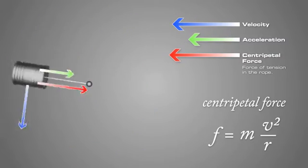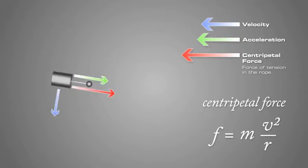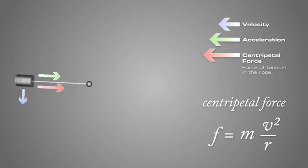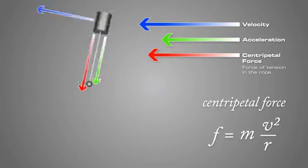An increase in mass or velocity or a decrease in radius will result in an increase in the centripetal force. A decrease in mass or velocity or an increase in radius will result in a decrease in the centripetal force. A change in velocity results in the largest change in centripetal force.